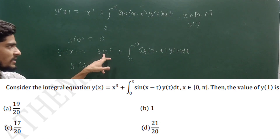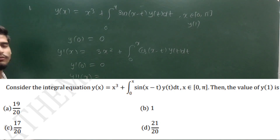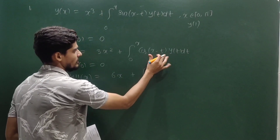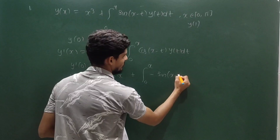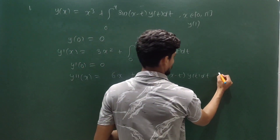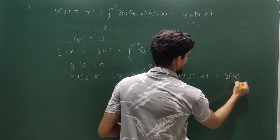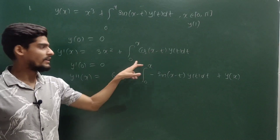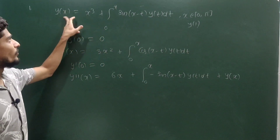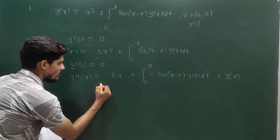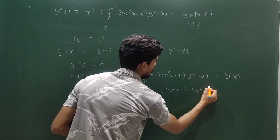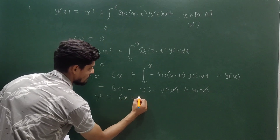Now calculate y''(x) using the Newton-Leibniz formula. You get y''(x) = 6x + ∫₀ˣ [−sin(x − t)] · y(t) dt + cos(x − x) · y(x). The upper limit term gives cos(0) · y(x) = y(x), and the lower limit term is zero. The integral part equals y(x) − x³ from the original equation. Substituting, y''(x) = 6x + (x³ − y(x)) + y(x) = 6x + x³.